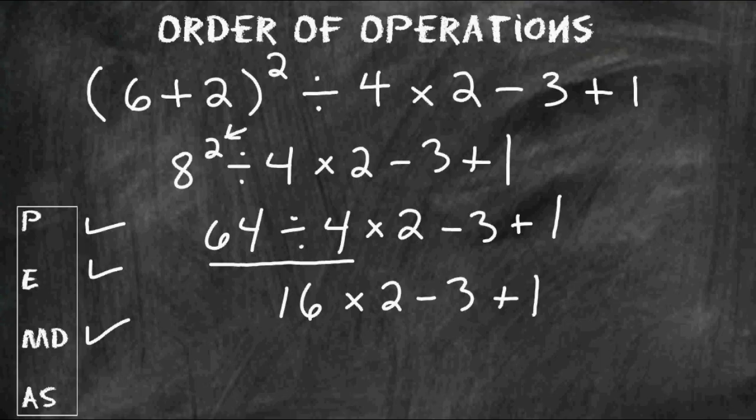So next we do 16 times 2, which is 32. We bring down the minus 3 and the plus 1.